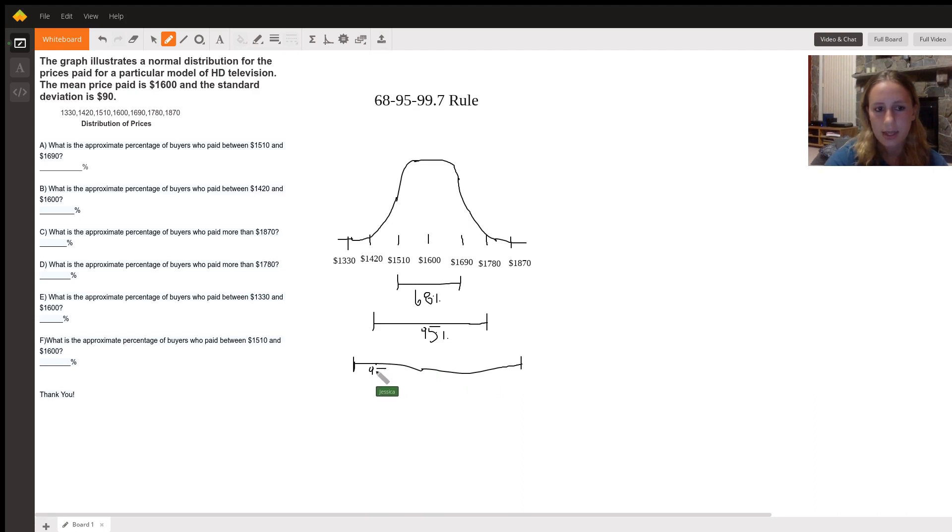So let's go ahead and look at A. A states, what is the approximate percentage of buyers who pay between $1,510 and $1,690? Based on our graph, that's 68%.